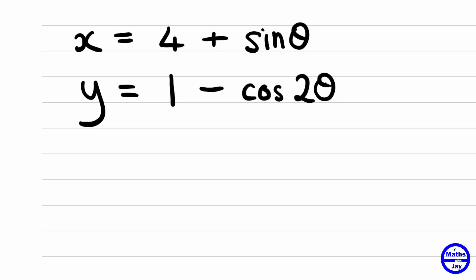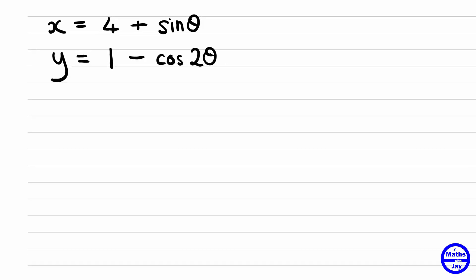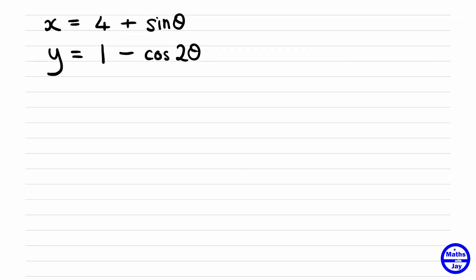So we're thinking about what identity links cos2 theta and sin theta. Well cos2 theta is the one that we can write in terms of sin theta. So let's just write that down. We know that cos2 theta is 1 minus 2 sin squared theta.